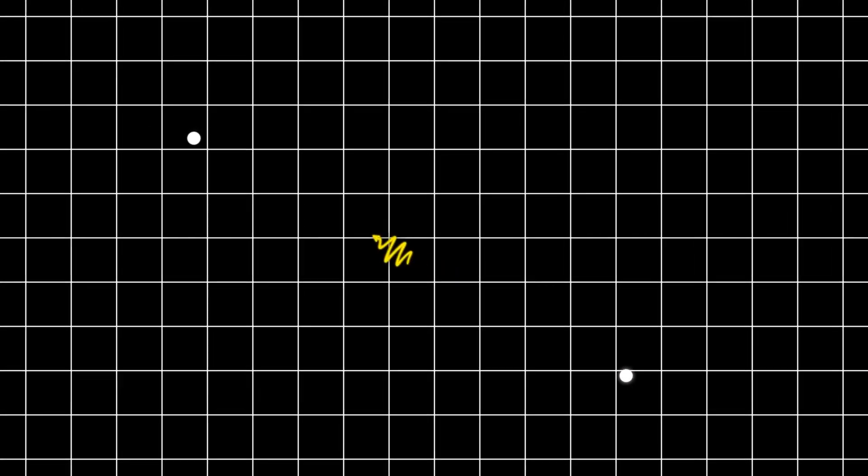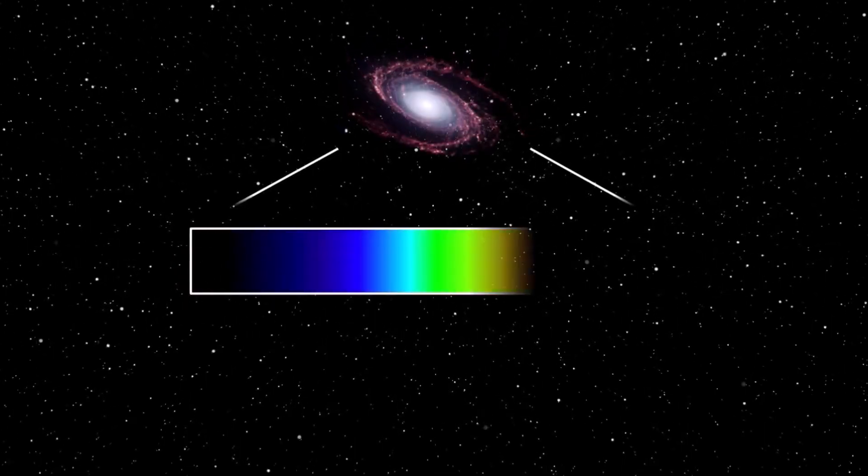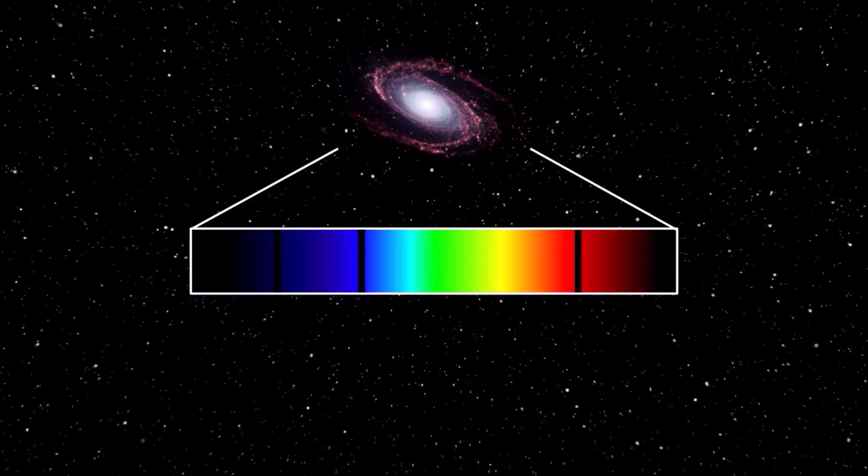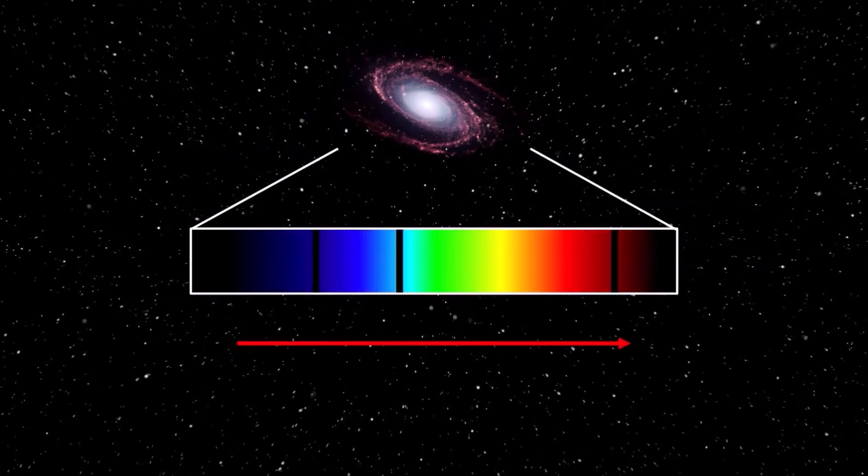Third, the light from these spirals and ellipticals appears to be shifted, with more distant objects displaying a more significant redshift directly proportional to their distance, which is consistent with an expanding universe.